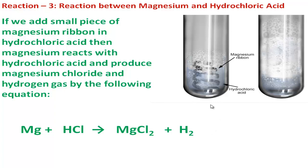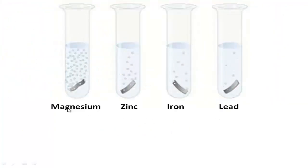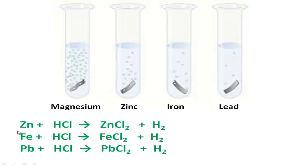Similarly, you can do this experiment using other metals — for example, zinc, iron, or lead — and a similar type of reaction will occur, with the equation changing accordingly. Zinc reacts with hydrochloric acid producing zinc chloride and hydrogen. Iron reacts with hydrochloric acid producing ferrous chloride and hydrogen. Lead reacts with hydrochloric acid producing lead chloride and hydrogen gas.